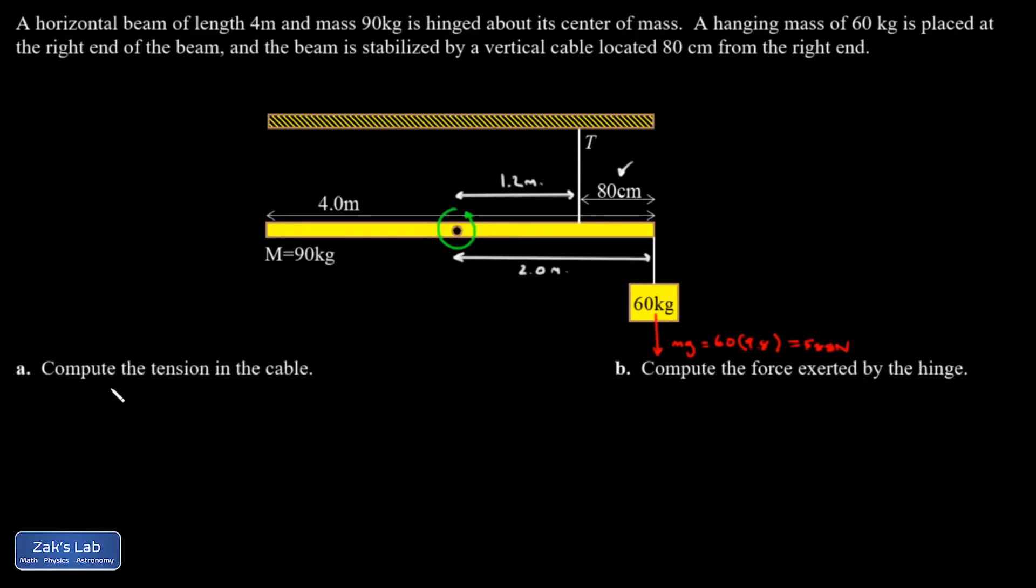Okay, so let's knock out question A. I'm going to use the fact that the sum of the torques is zero about any rotation axis I choose, and I chose the center of mass here. That's the same as saying the clockwise torques have to sum to the same amount as the counterclockwise torques.